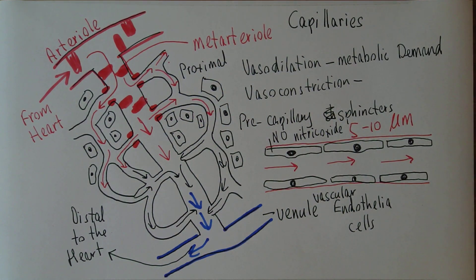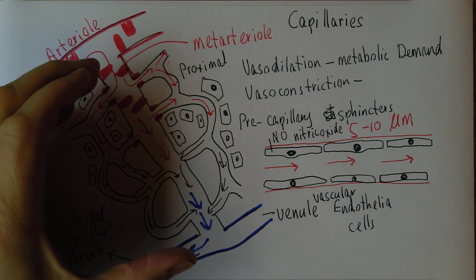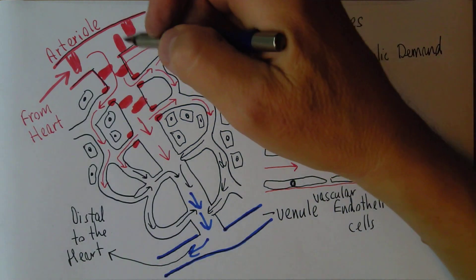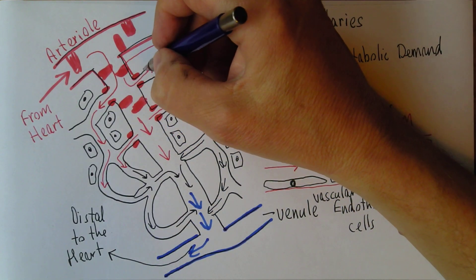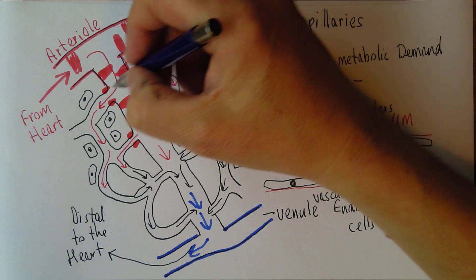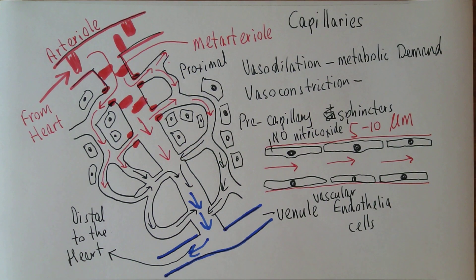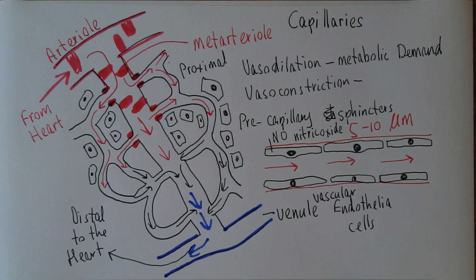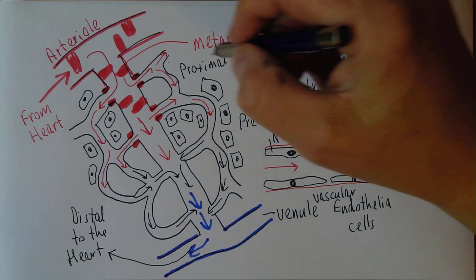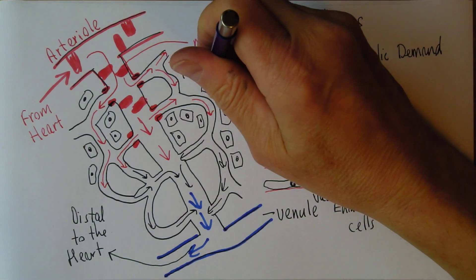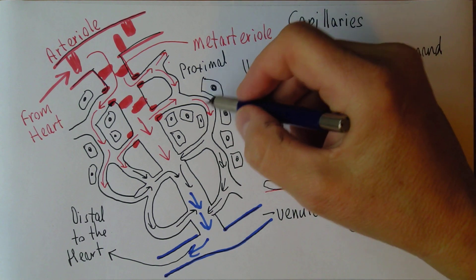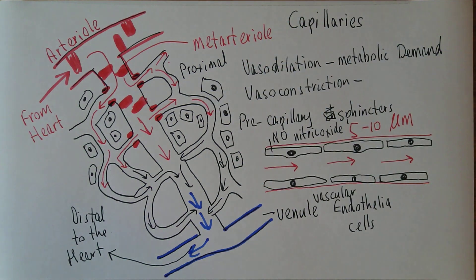The vasotone can also be controlled by the nervous system. For example, stimulation of the sympathetic nervous system will tend to dilate the pre-capillary sphincters in muscles, but will tend to constrict the pre-capillary sphincters in areas such as the skin. So there are a lot of control mechanisms at work, ensuring that tissues receive the oxygen they require and get rid of waste products when needed.